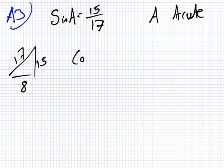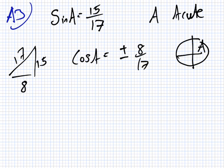So, that means cosine A equals plus or minus 8 over 17. Now, we're told that A is acute. So, if A is acute, we must be here. So, is cosine positive or negative in the first quadrant? Positive. So, we take the positive value.